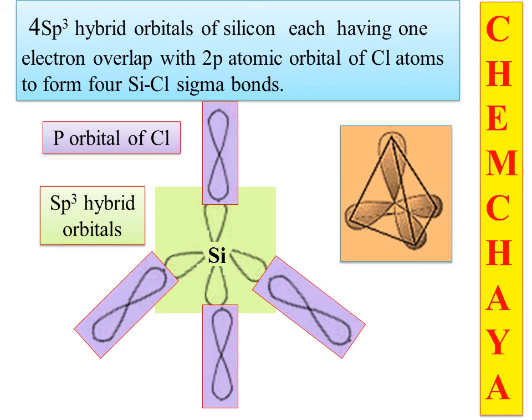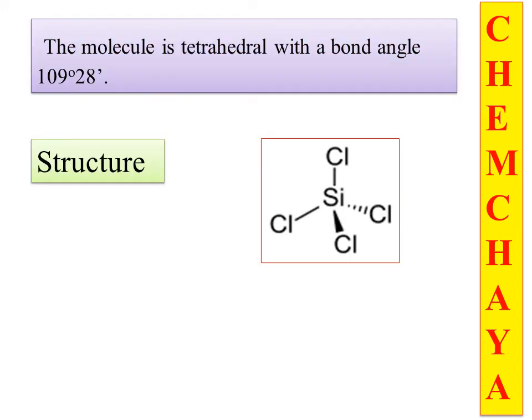The sp3 hybrid orbital of silicon makes four bonds with four chlorine atoms. One sp3 hybrid orbital has one unpaired electron and the p-orbital of chlorine has one unpaired electron. They overlap and pairing occurs, thereby a sigma bond is formed. Silicon is at the center and in the four corners of the tetrahedral are the four chlorine atoms. The molecule is tetrahedral with a bond angle of 109 degrees 28 minutes.